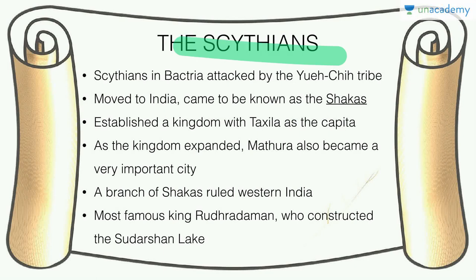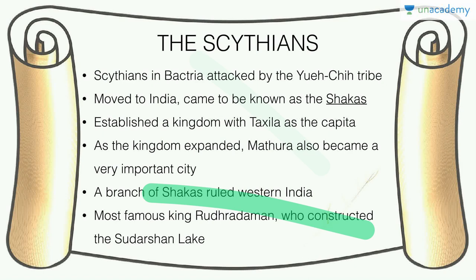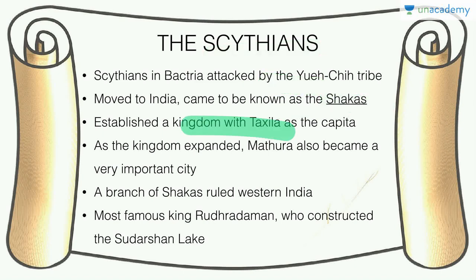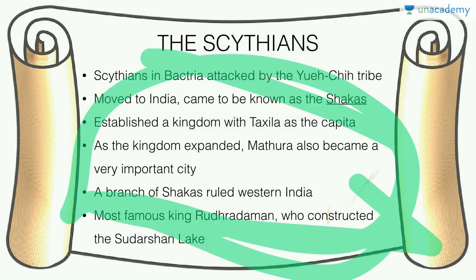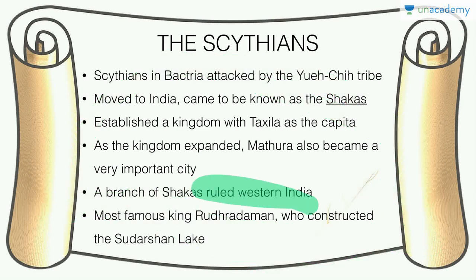The Scythians who pushed the Indo-Greeks out of Central Asia occupied Bactria, then were themselves pushed by another Central Asian tribe. These tribes moving into India are called Shakas. They established a kingdom with Taxila as capital and moved inward to Mathura. A branch of Shakas ruled western India, with their famous king Rudradaman, who constructed the Sudarshana Lake.